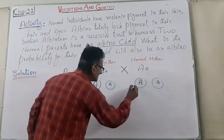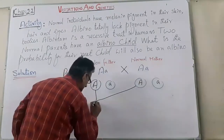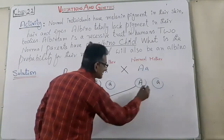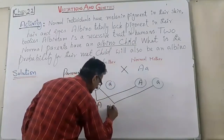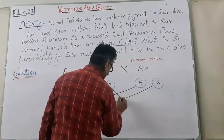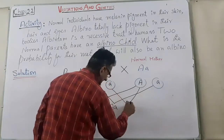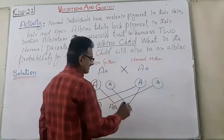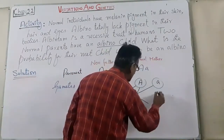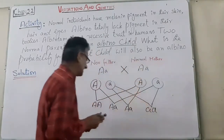Now combining the gametes: capital A from father combines with capital A from mother to give capital A capital A. Capital A from father combines with small a from mother to give capital A small a. Small a from father combines with capital A from mother to give capital A small a. Small a from father combines with small a from mother to give small a small a.